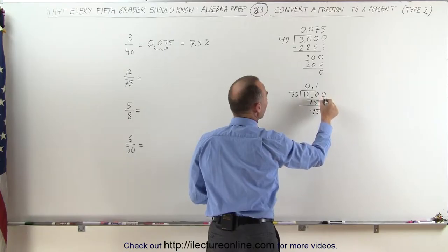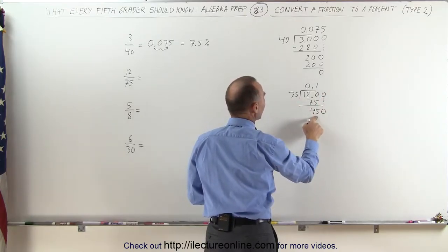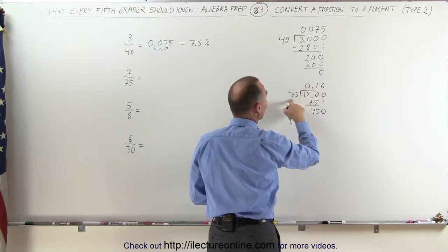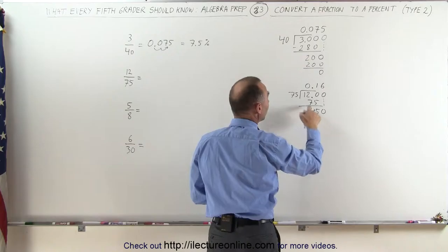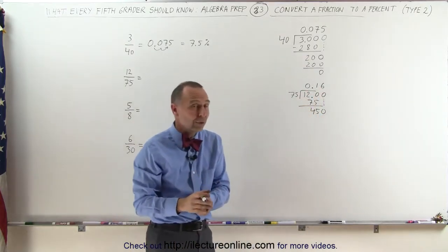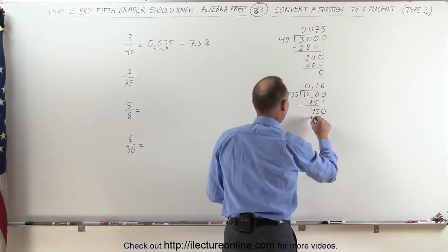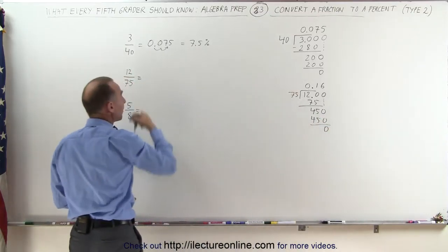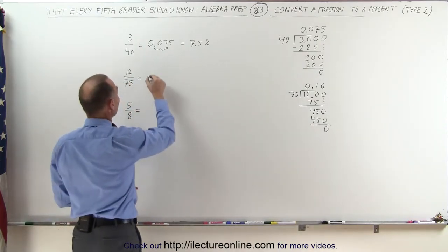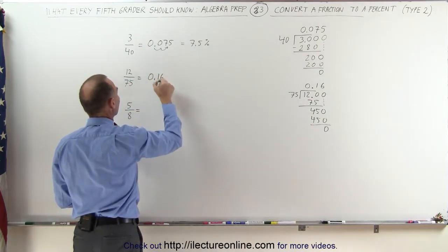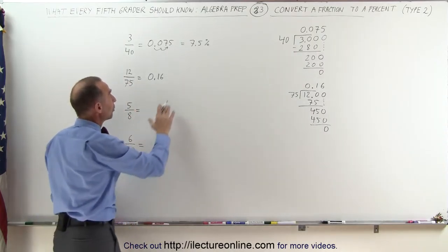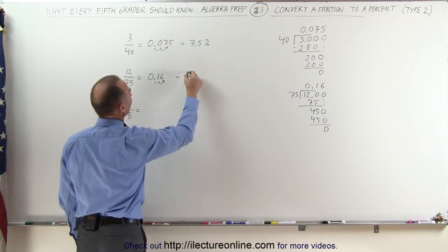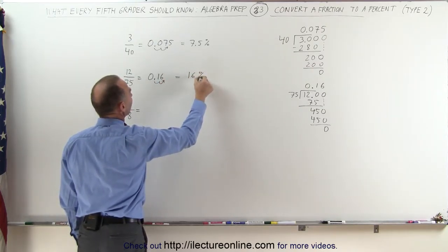We add a 0 here and drop the 0 down. 75 goes into 450 exactly 6 times, because 6 times 7 is 42 — that's 420 — and 6 times 5 is 30. 420 plus 30 is 450, so it fits exactly. The remainder is 0, which means that 12 divided by 75 can be written as the decimal 0.16. Now that we have a decimal, we can turn it into a percent by moving the decimal place over two spots. This is therefore equal to 16%.